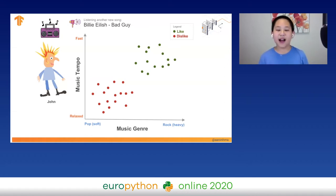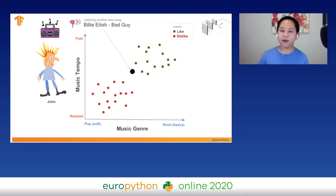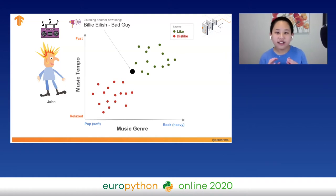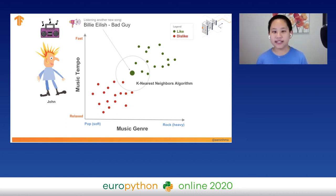How about Bad Guy by Billie Eilish? Where do you think the point will be? Some of you might say John probably liked this song, and some might say he disliked it. Here we can use a machine learning algorithm known as K-Nearest Neighbors. We set a K parameter — if K is 4, we draw a circle with 4 data points inside. Then we go with the majority and say that John would probably like this song.